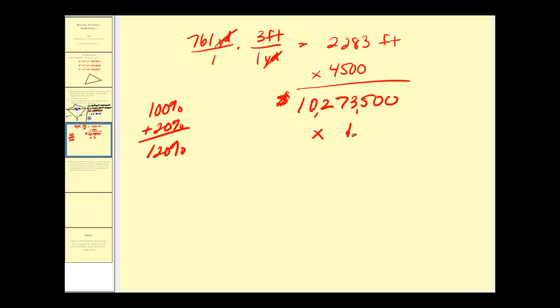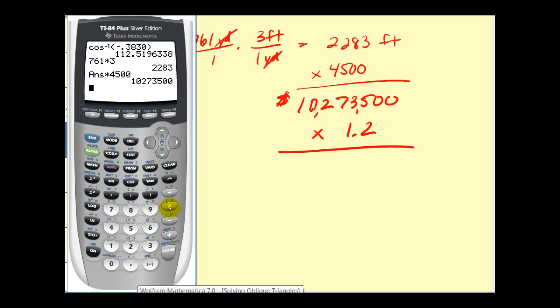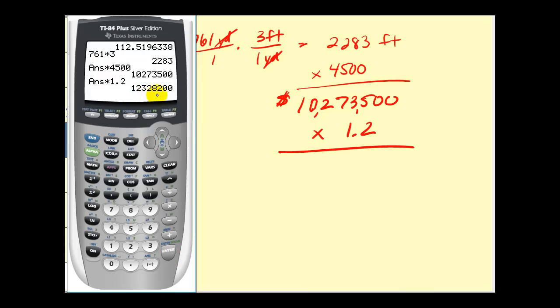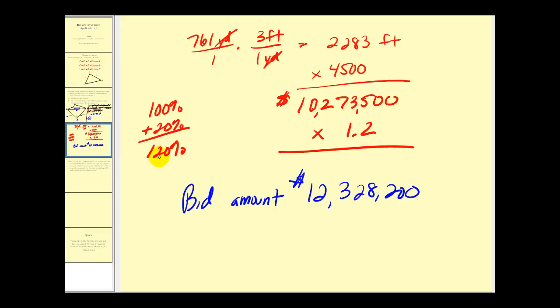So we'll multiply this by 1.2, and that'll give us the bid amount. So it looks like we'll have $12,328,200. Remember, to find the percent of a number, you just convert to a decimal and multiply.